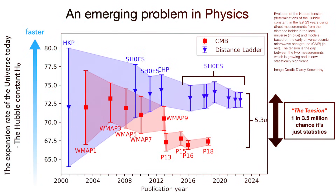The difference may seem small — about 9% — but it's a huge deal in cosmology, because each methodology has about a 1% chance of being a fluke, meaning that these things don't agree at over the five-sigma level.